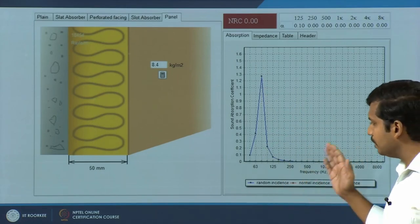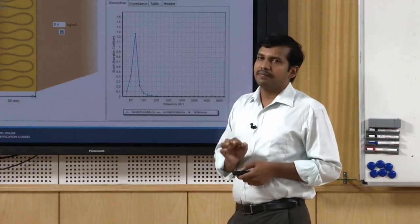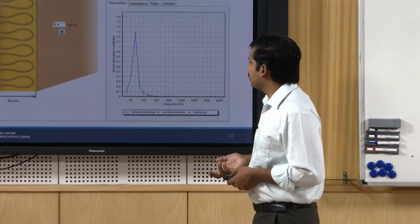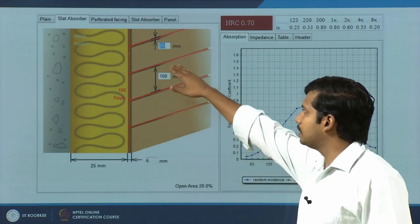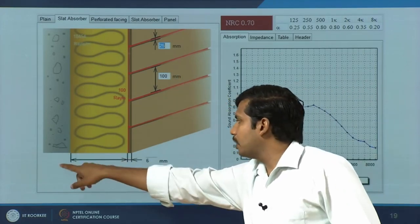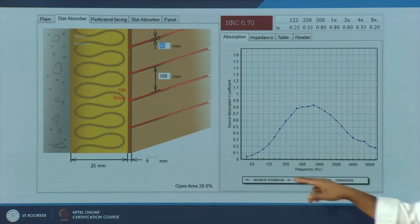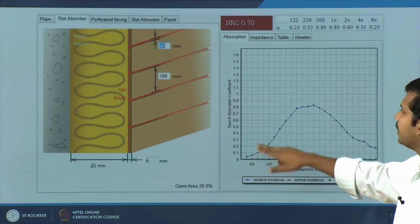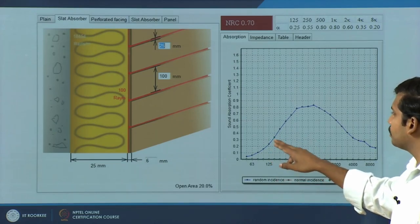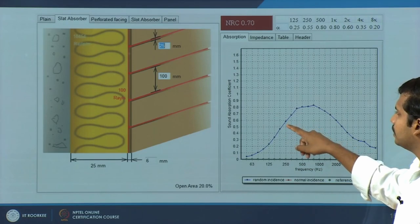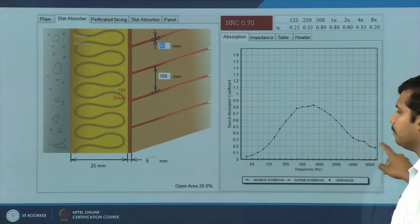With the thicker backing, you get very high absorption shifting towards the low frequency — a good strategy to use when you require absorption at a very specific problem frequency. Now, instead of a solid panel, if you have a slatted panel — 25 mm thick glass wool backing, same wall material, plus a 6 mm thin panel with slats — at low frequencies you do not get much. A perceivable absorption coefficient occurs around 250 Hz where it is above 0.5, with better absorption in the mid frequency range, eventually dropping off in the high frequencies.